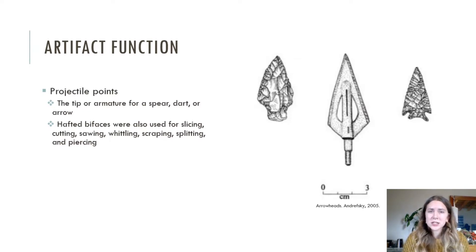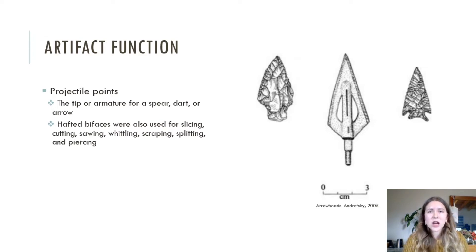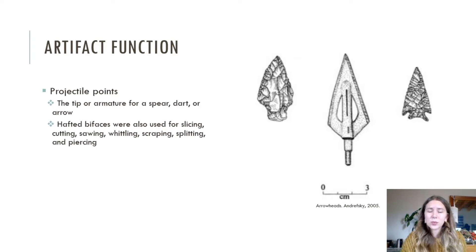Projectile points are, as the name suggests, assumed to be the tip or point of projectile weaponry such as spears, arrows, or darts — inferred also by the similarities between stone and modern arrowhead tips. However, microwear analysis has indicated that artifacts of this type also appear to have been used as cutting and butchering tools. Hafted bifaces, also initially perceived to be solely used as spear points, have been seen to be used for tasks such as slicing, cutting, sawing, whittling, scraping, splitting, and piercing.